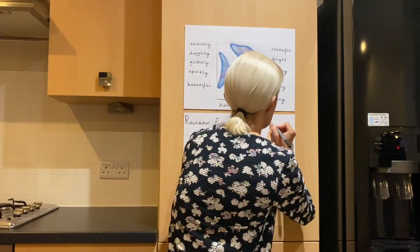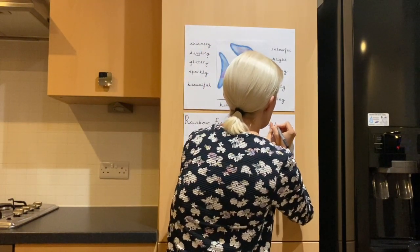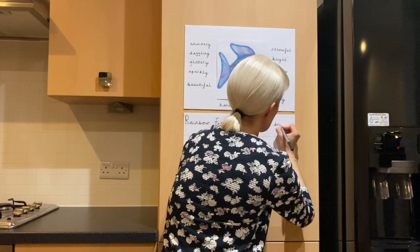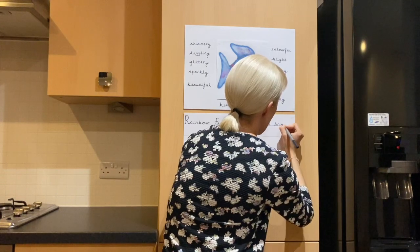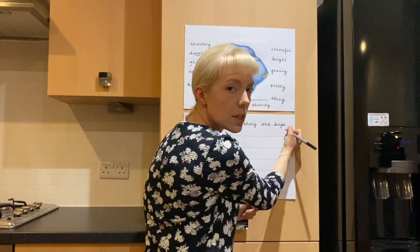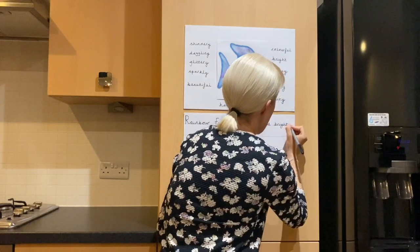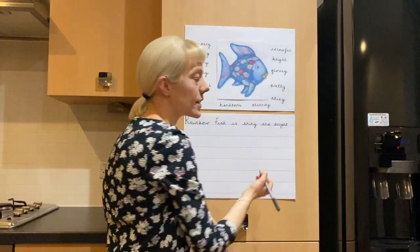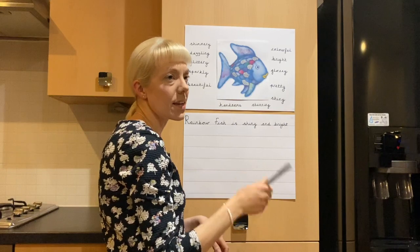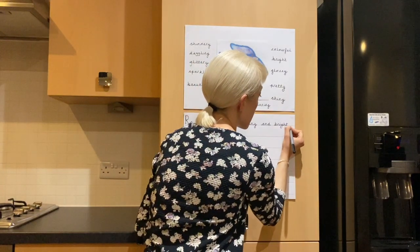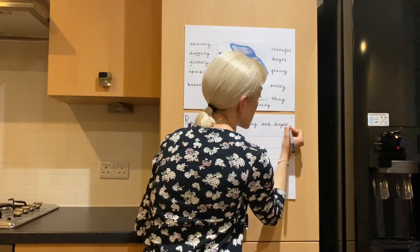Help me spell this: D, R, I — that's the 'igh' sound, which is a trigraph that we know — with a T at the end. Bright. And then that's the end of my sentence, so what do I need?